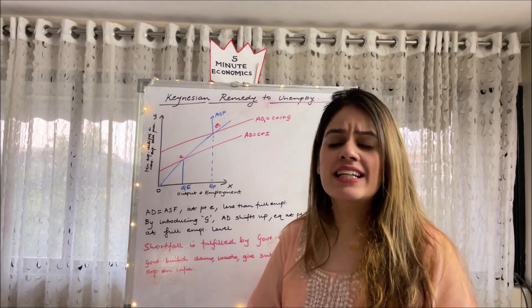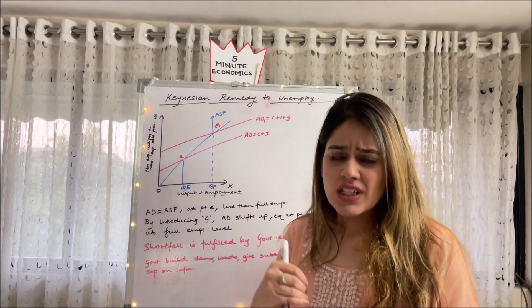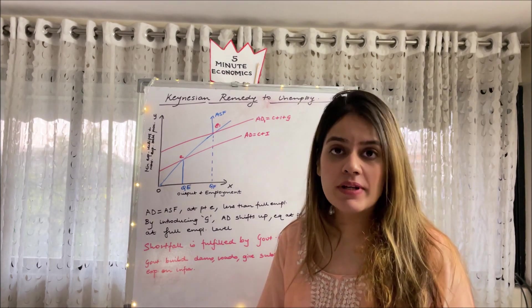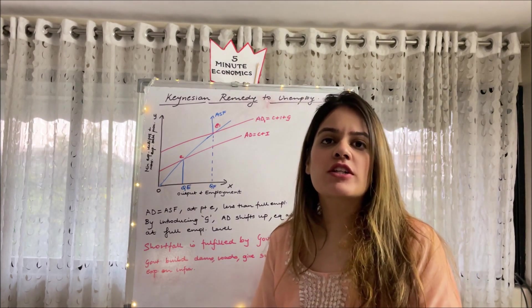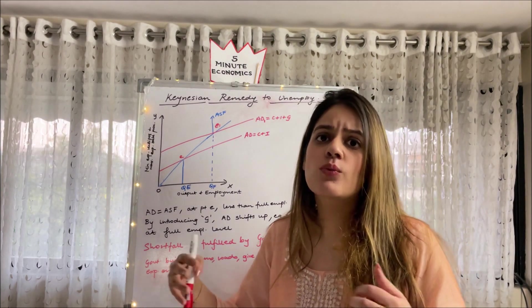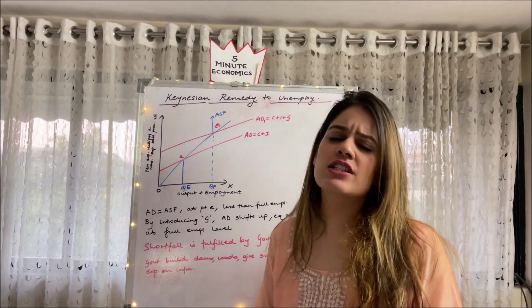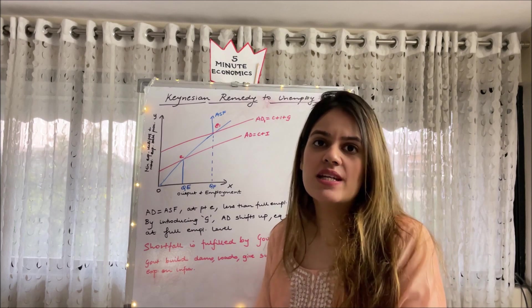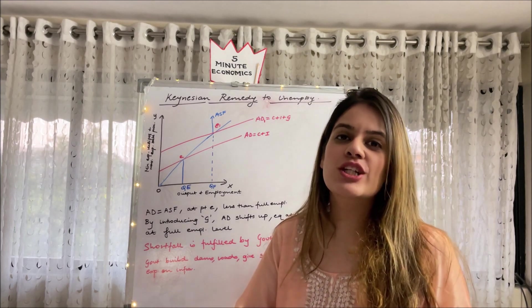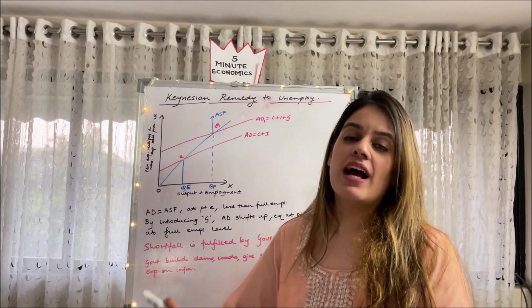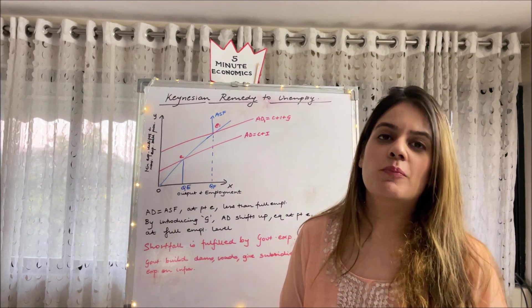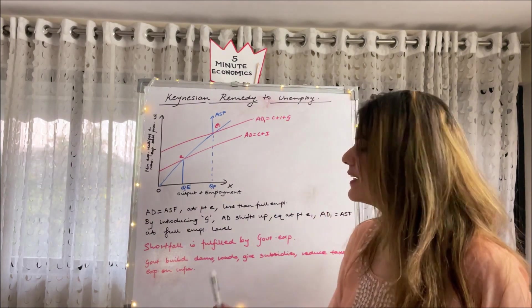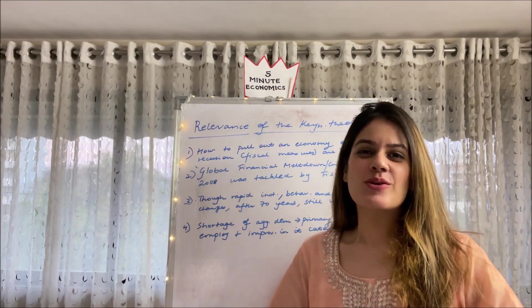He says that since consumption expenditure has its own limitations, it is investment expenditure on which the onus lies. And investment expenditure cannot just increase by private individuals, so we have to let government step in, which will actually increase the aggregate demand and further push up the output and employment in an economy. So I hope you are clear with this particular diagram.